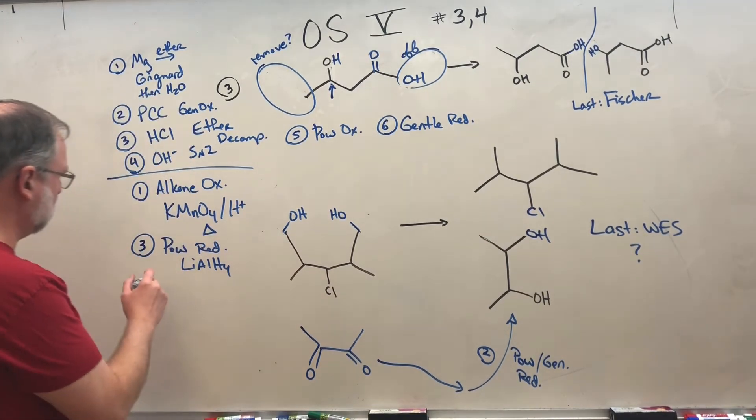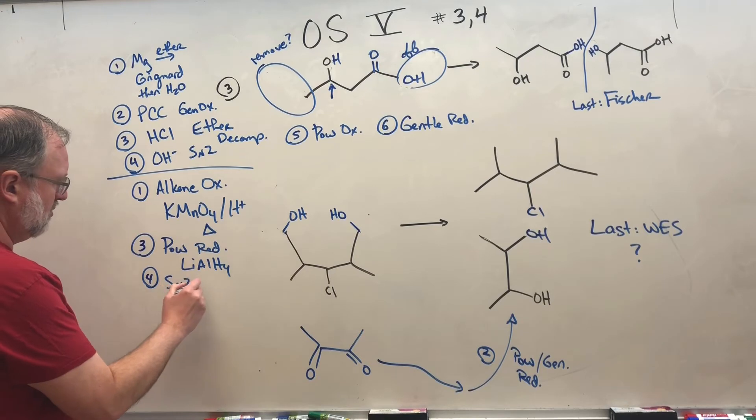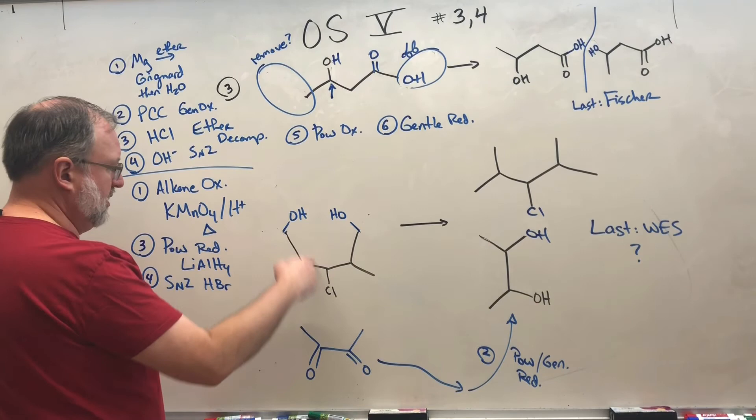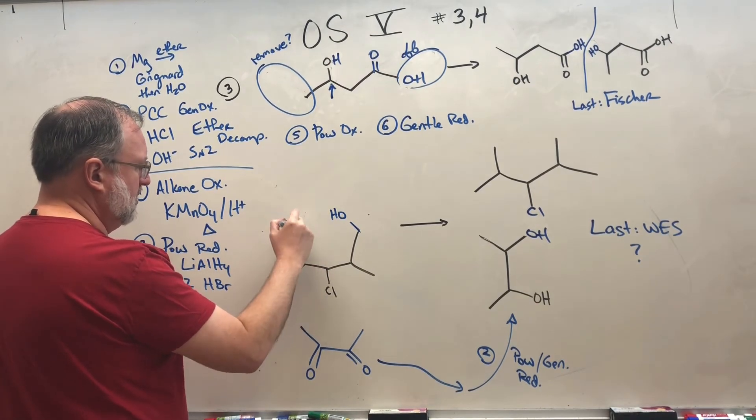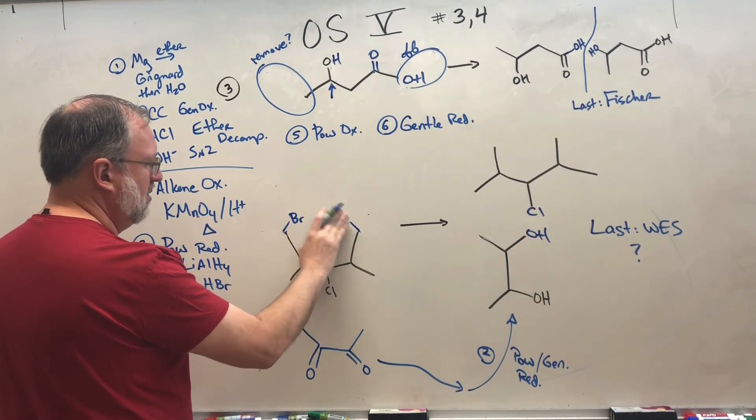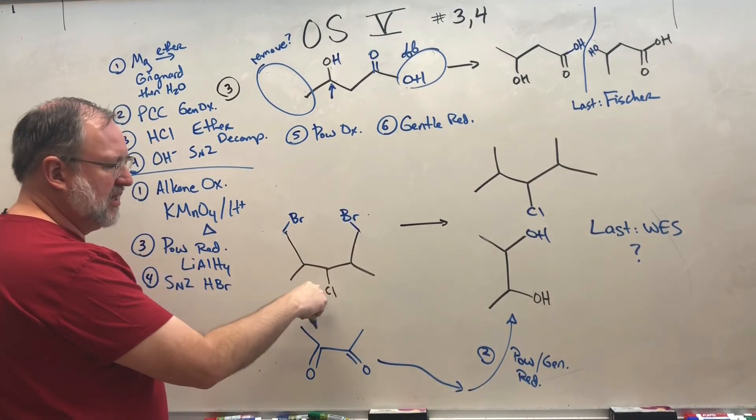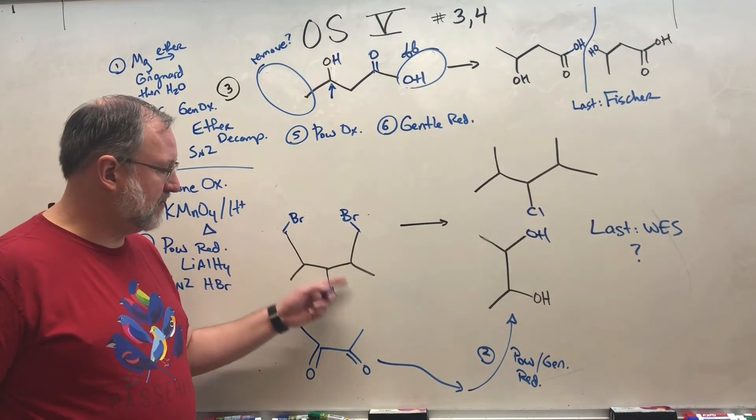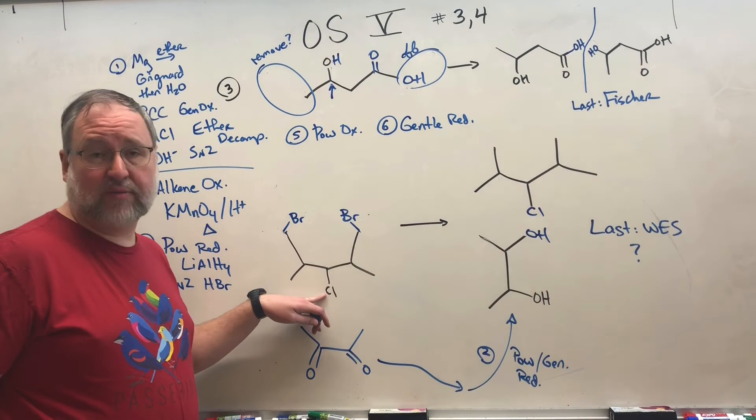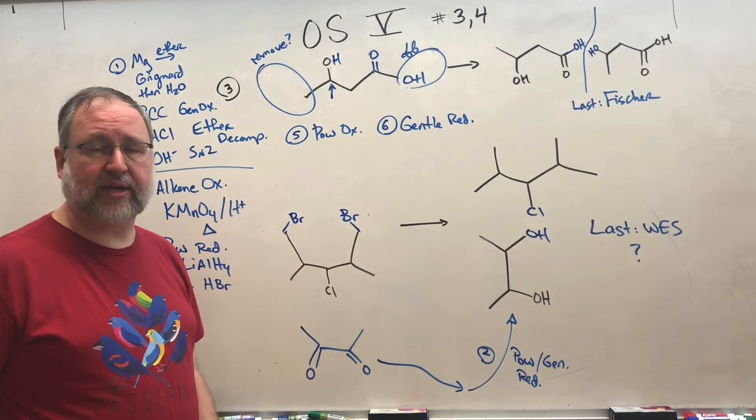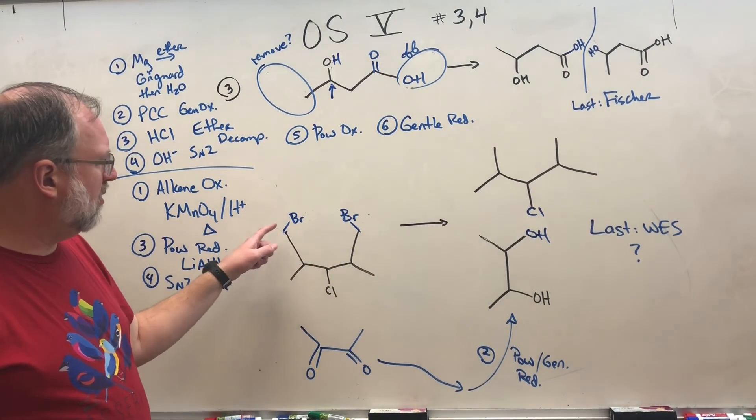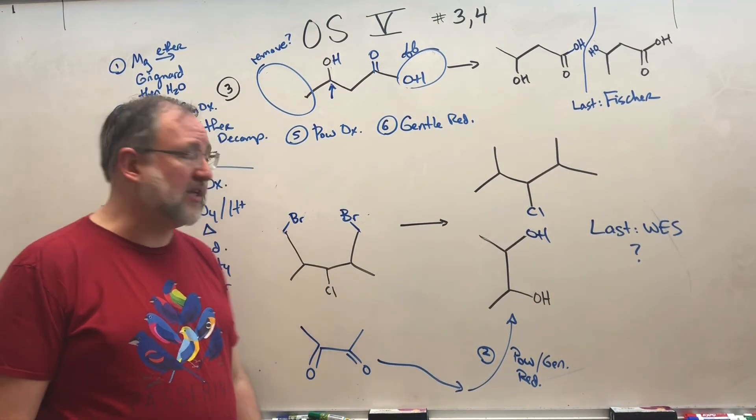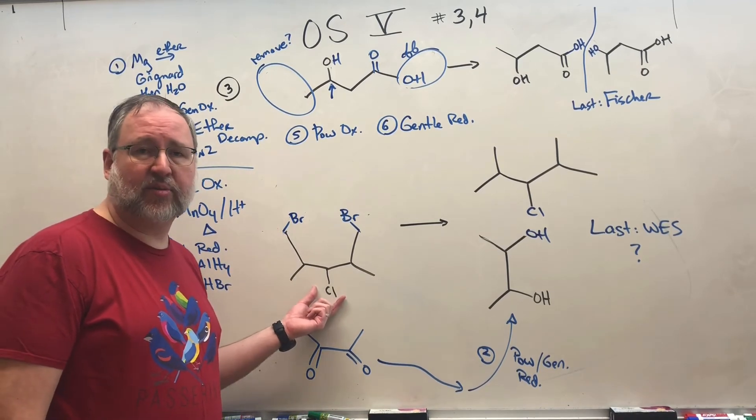So there are a couple of different ways that you can go about that. But here is one way. If this is step one, step two, we'll call this step three. You can do a little powerful reduction with lithium aluminum hydride. That basically takes these acid groups and make them into alcohols. Then if you want to, you can do a little SN2 with HBR. SN2 is going to make these into BRs and BRs. Likely it's not going to affect this, but you might have some substitution here too.